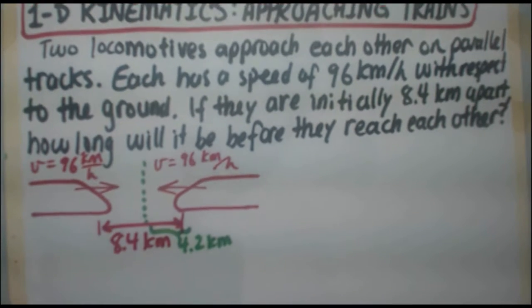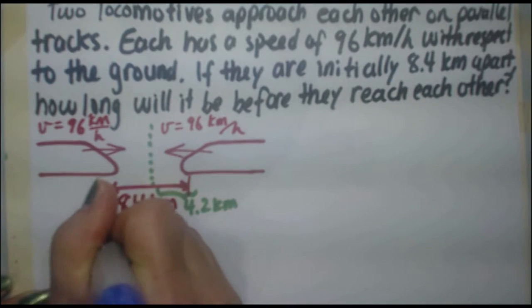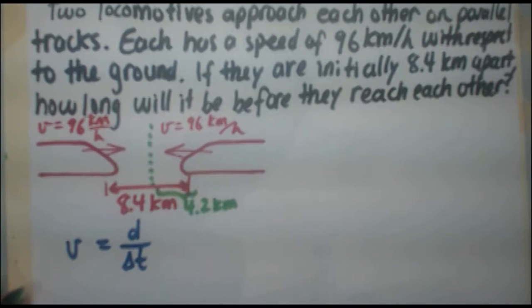If we go ahead and solve this, how long will it be before they hit each other? Using our original formula, the speed equals distance over time. We're trying to find time. You have to rearrange this equation for time.